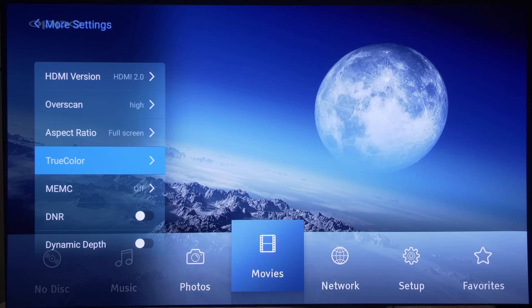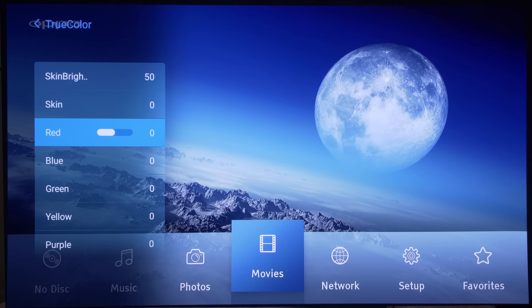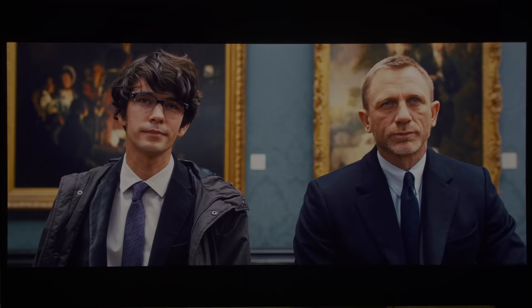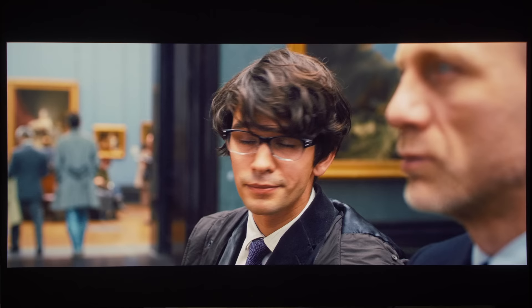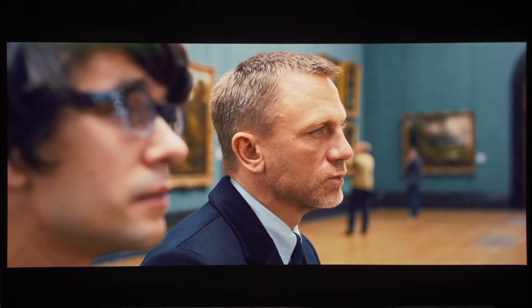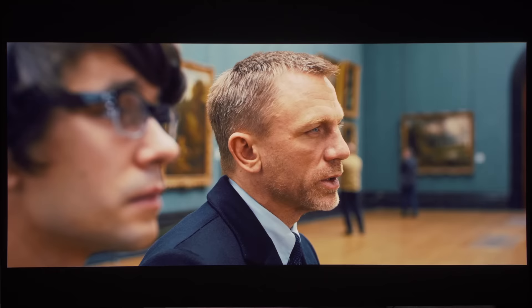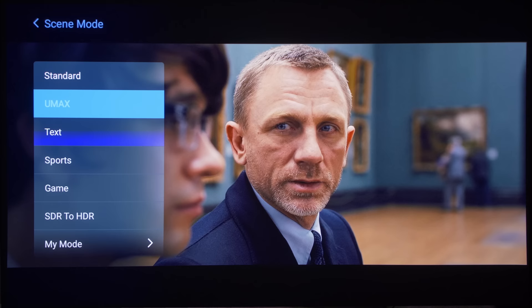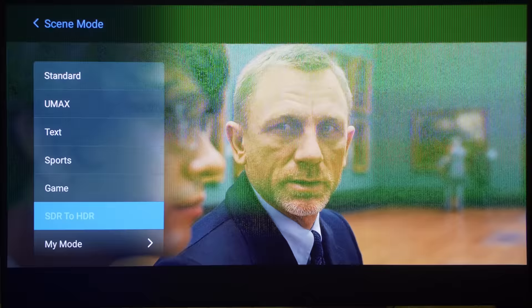The B5U is equipped with a color management system under the TrueColor submenu, but we found it didn't improve color accuracy to any meaningful degree, so we left it untouched, using only the single-point white balance controls for calibration. While the result wasn't the last word in color accuracy given the projector's limitations, our calibration brought forward a more natural-looking image, which you can hopefully see as we switch from the out-of-the-box picture modes, ranging from Standard and IMAX to Game and SDR to HDR, finally onto the calibrated My Mode preset.